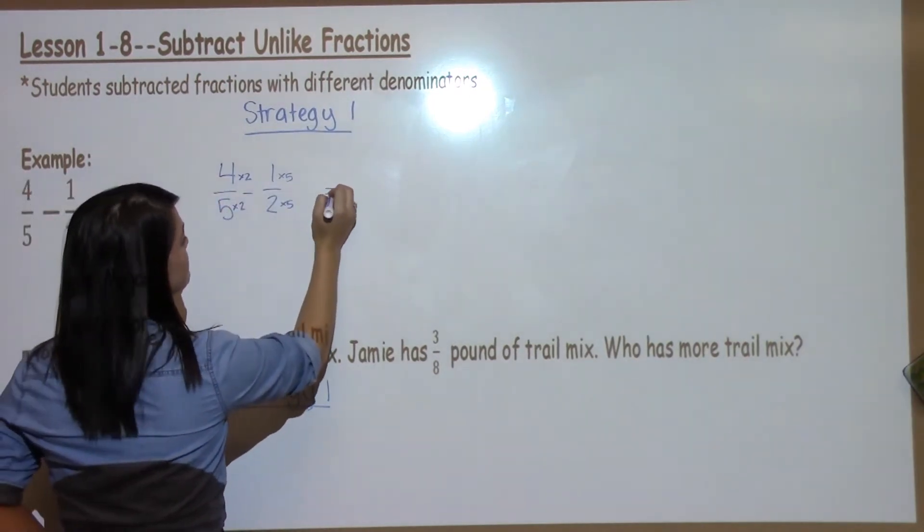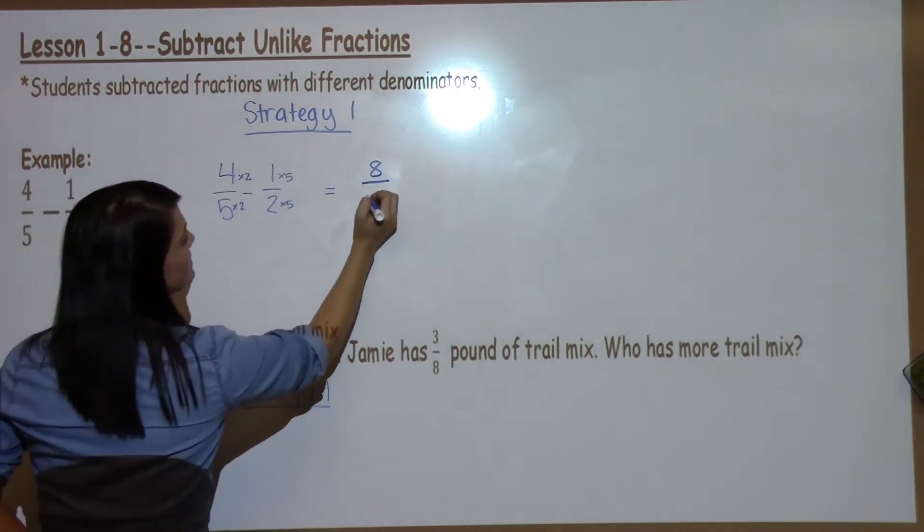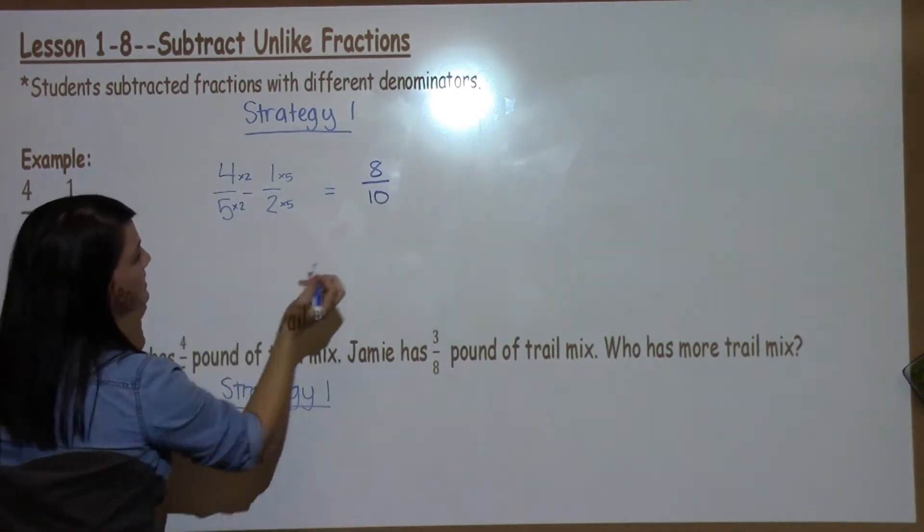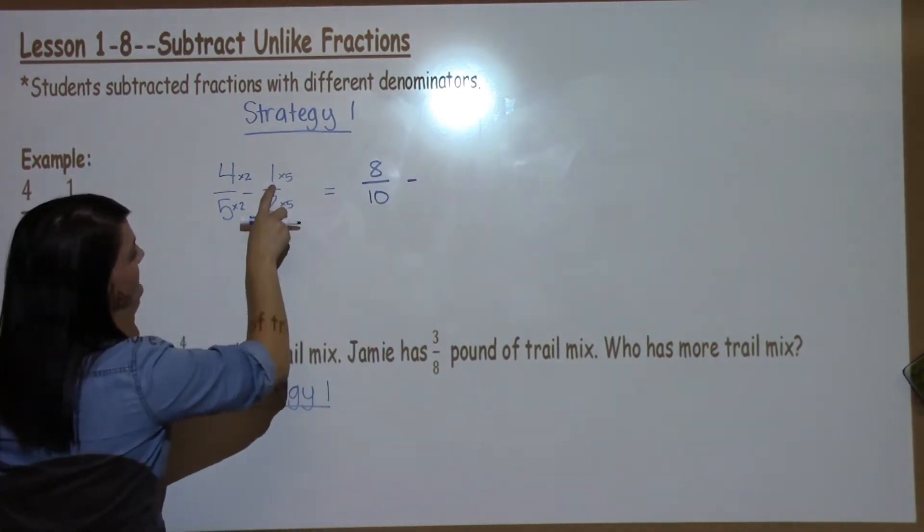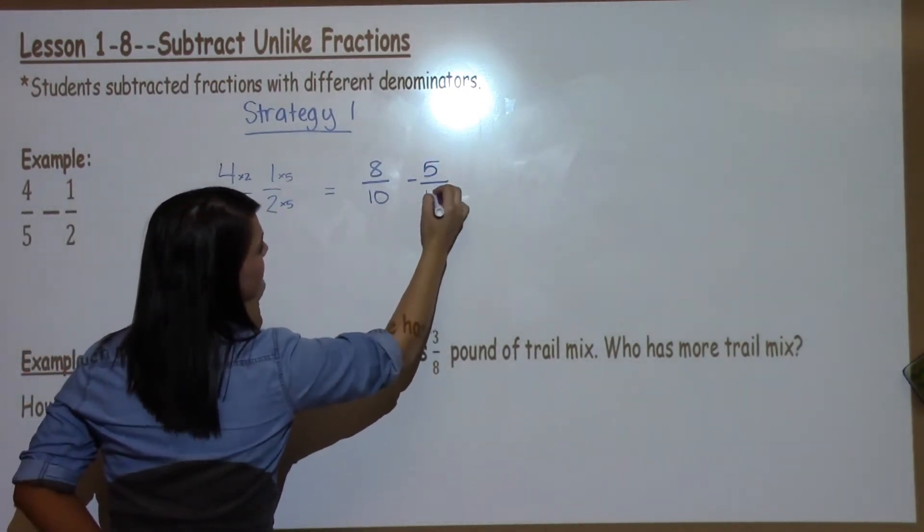So 4 times 2 is 8, 5 times 2 is 10. I'm subtracting. I've got 1 times 5 is 5, 2 times 5 is 10.